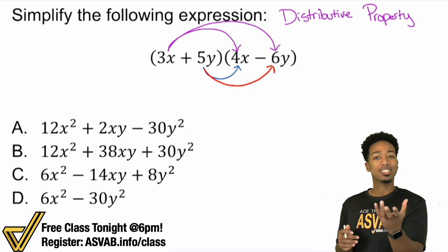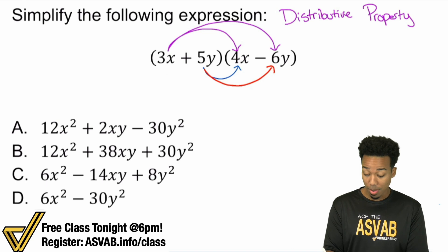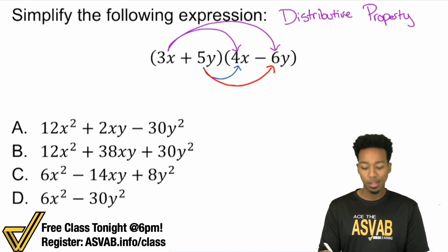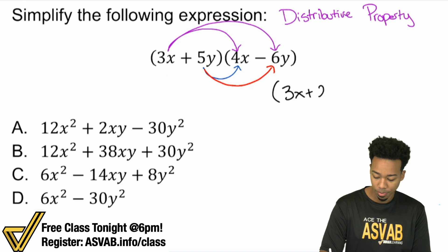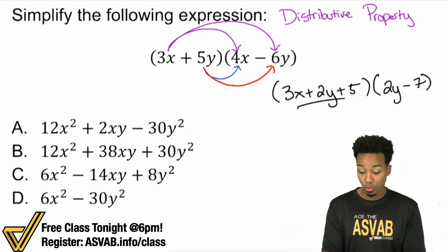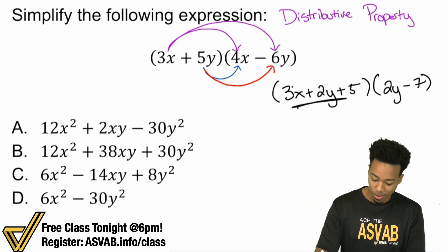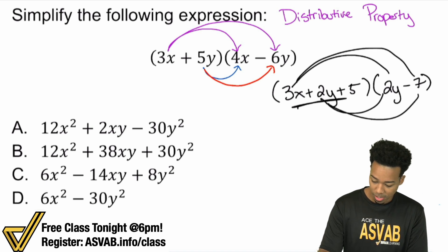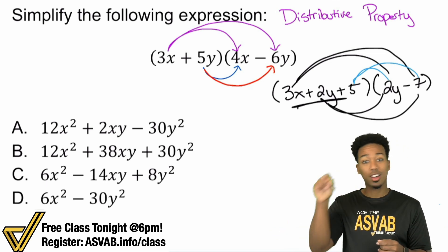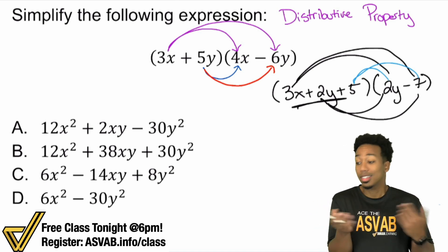If you memorized FOIL—first outside inside last—that only works for two by twos. If I gave you a three by two you had no idea what to do if all you know is FOIL. So here's what I mean. If you had something like this, you got three terms in there and then something like that. Well then FOIL doesn't work for this because you have three terms here. But the general rule will always work. Multiply everything from one side of the parentheses with everything from the other. Just draw little arrows and little connections between the terms on this side with the terms on that side. And you multiply then simplify and that's it.